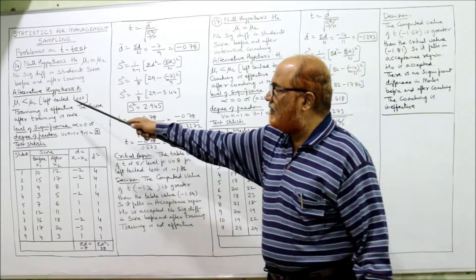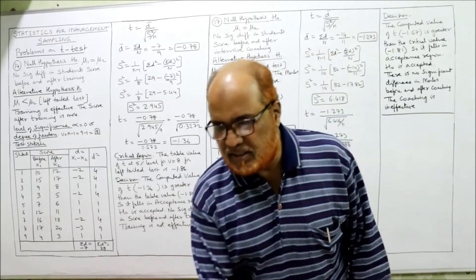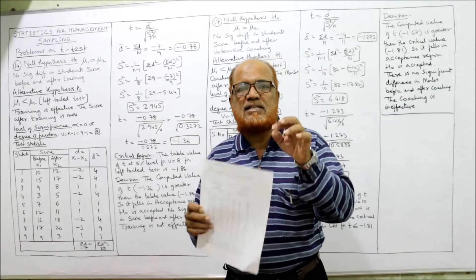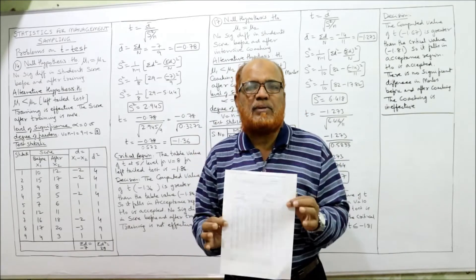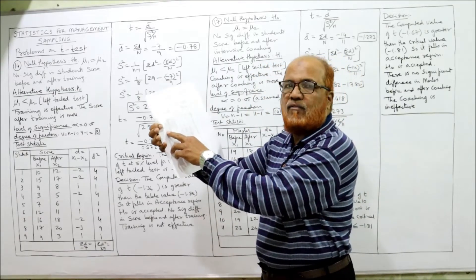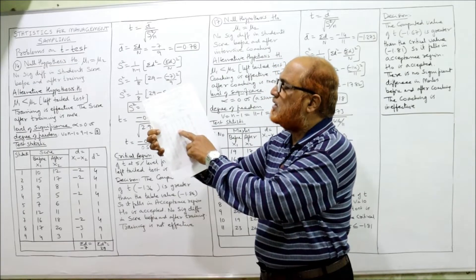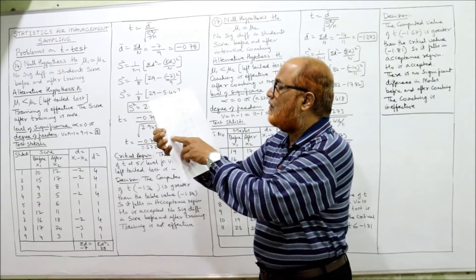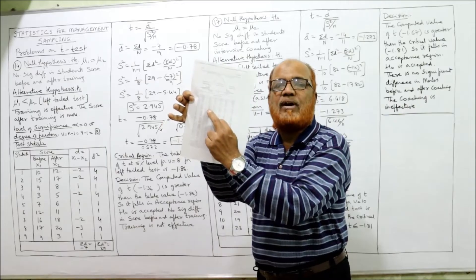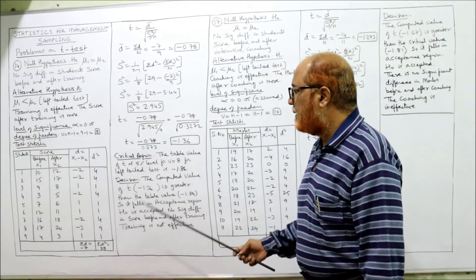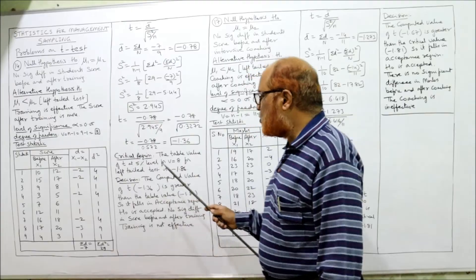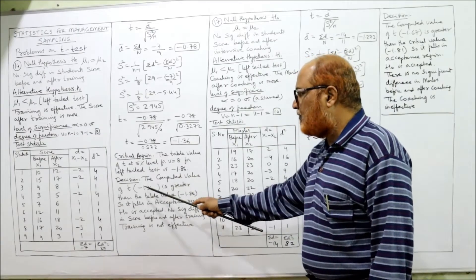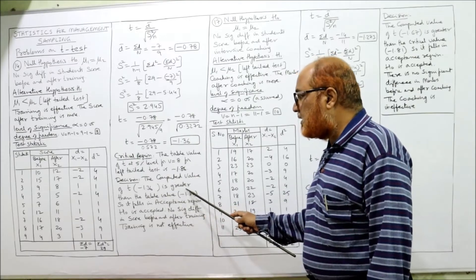Referring to the t-table: for v = 8 under 0.05, the two-tail value is 2.31. One column before gives the one-tail value of 1.86, so for a left-tail test it is −1.86. Now we compare: the computed value −1.36 is greater than the table value −1.86.